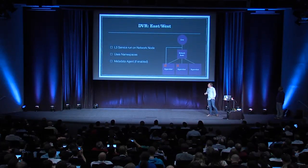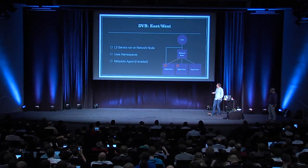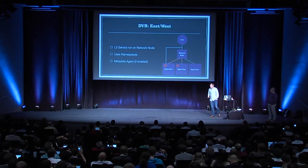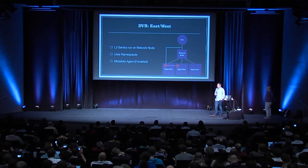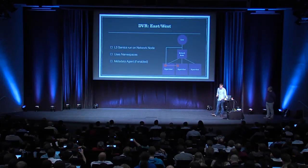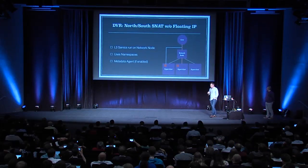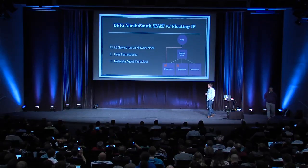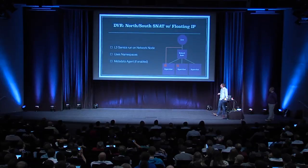That fixes north-south traffic, but what about east-west traffic? If two instances want to talk, east-west traffic typically traverses the network node. With DVR enabled, we can talk directly hypervisor-to-hypervisor because we can tunnel directly using L2 population. For north-south: if you don't have a floating IP, traffic goes through the network node. If you do have a floating IP, it goes around the network node.